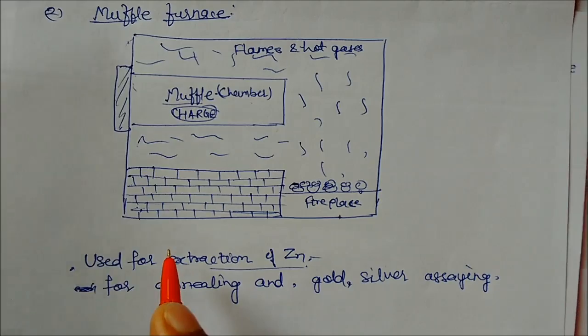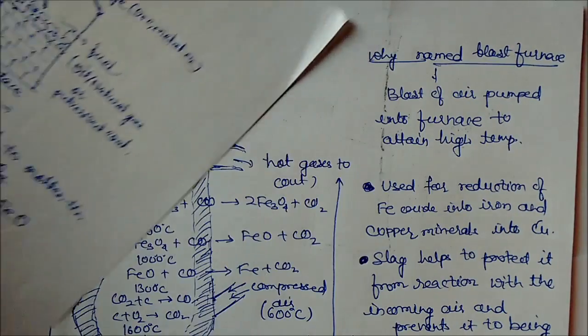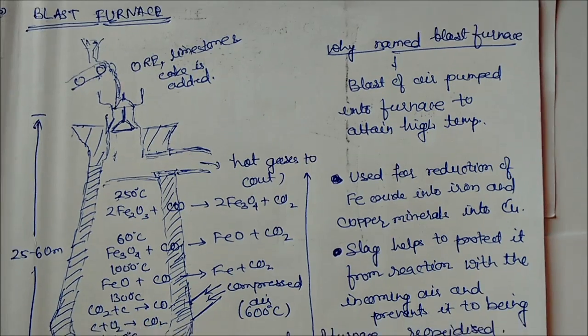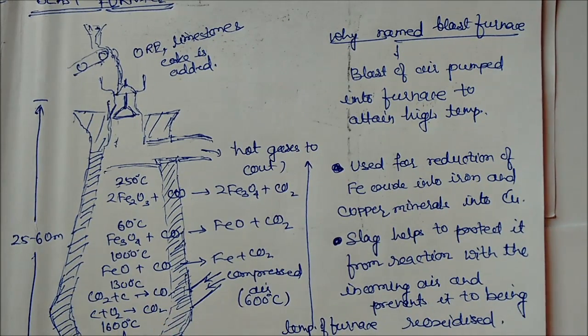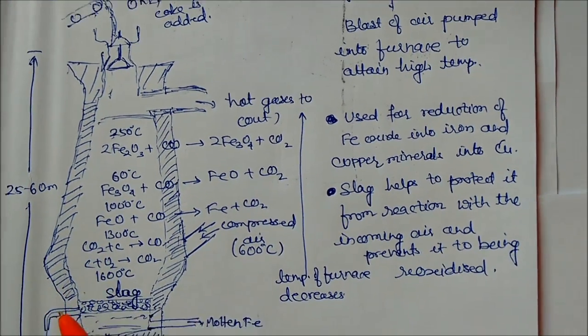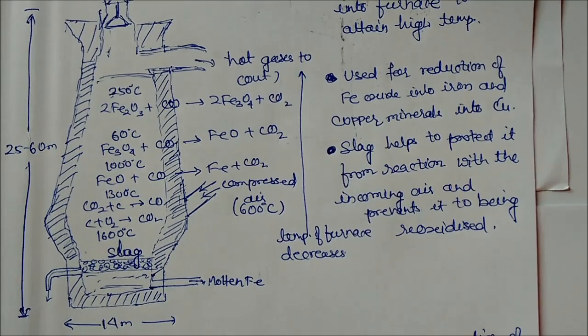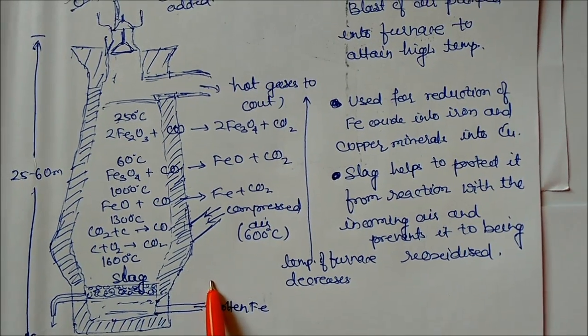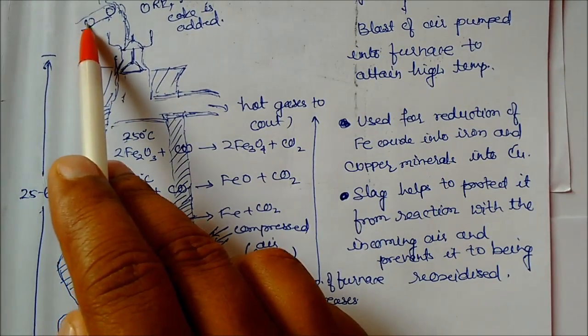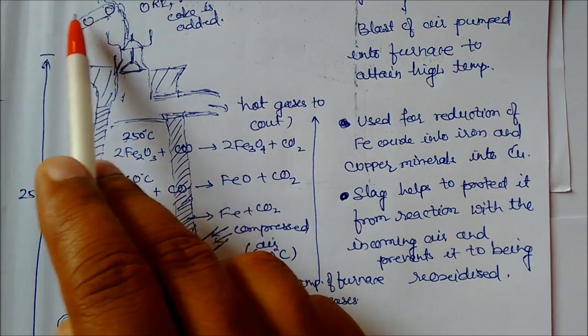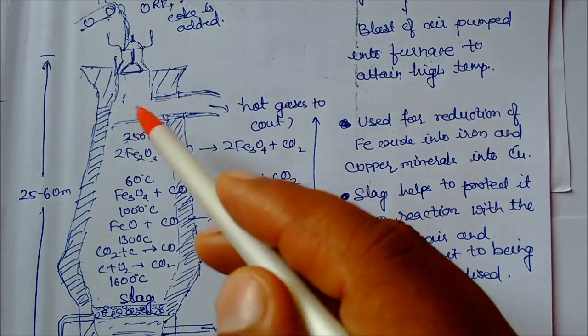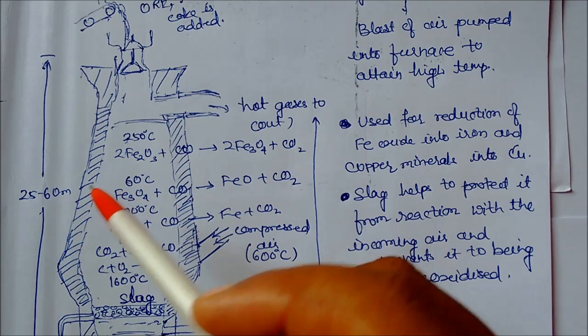Next furnace is blast furnace. Blast furnace is a very important furnace. You can see the diagram here. This is almost 25 to 60 meters in height and dimension is 14 meters in diameter. This diagram shows here is a crane, this is the hopper where the ores and limestone coke is added.